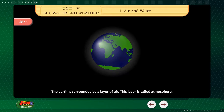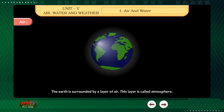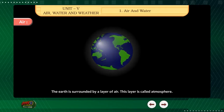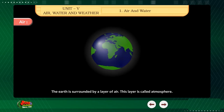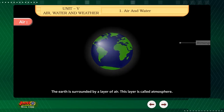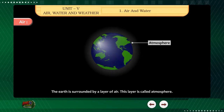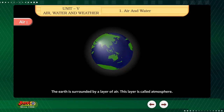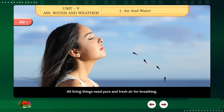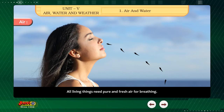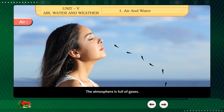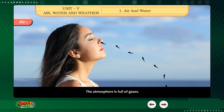Air — The earth is surrounded by a layer of air. This layer is called the atmosphere. All living things need pure and fresh air for breathing. The atmosphere is full of gases.